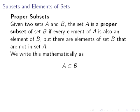A proper subset: if we have two sets A and B and the set A is a proper subset of set B, every element of A is also an element of B, but there are elements of set B that are not in set A. We write this mathematically as A is a proper subset of B.